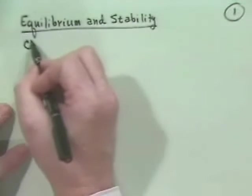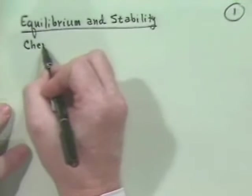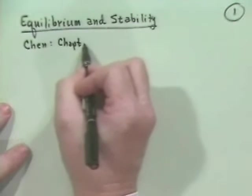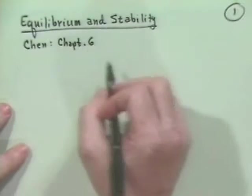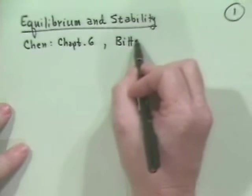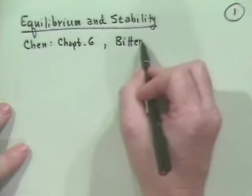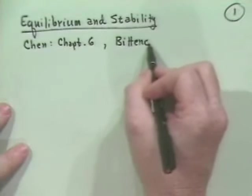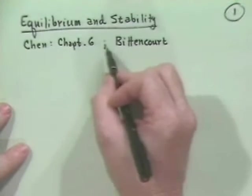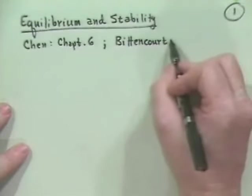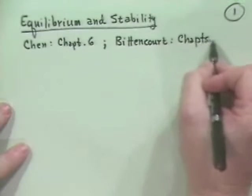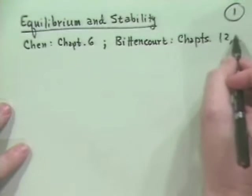So this is Chen Chapter 6, and Bittencourt chapters 12 and 13, although Bittencourt doesn't do too much about stability questions.